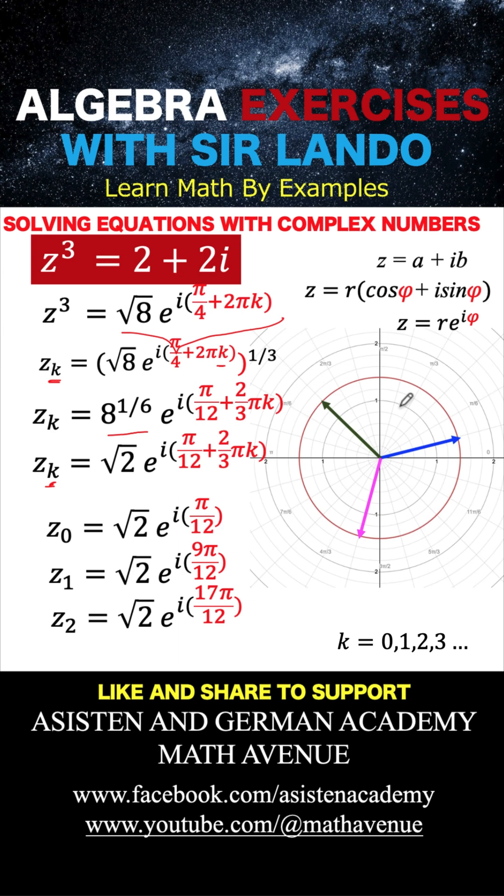And so for our final answer now, this is our general solution to this equation. z cubed equals 2 plus 2i, and our solution is z sub k is equal to the square root of 2 e raised to i times pi over 12 plus 2 thirds pi k, where k is equal to 0, 1, 2, 3, and so on.